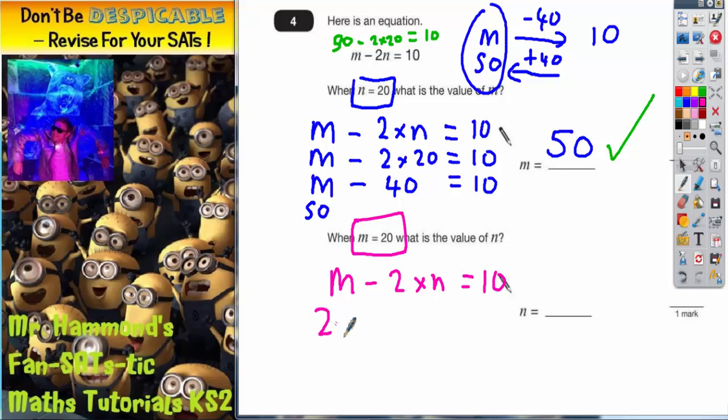So I'm going to replace the m with a 20. So 20 take away 2 lots of n equals 10.